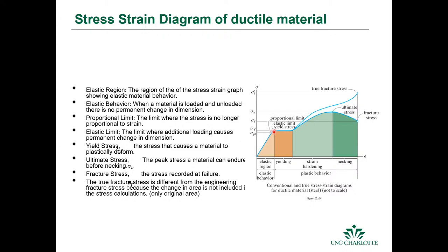Once we pass the proportional limit, stress is no longer proportional to strain and we get behavior that doesn't follow Hooke's law. Once we exceed the yield stress we get permanent plastic deformation — a permanent change in length or permanent strain. This is the area where we get yielding, and it will look different for different materials. After some point of yielding we enter an area of strain hardening, where you have permanent plastic deformation.